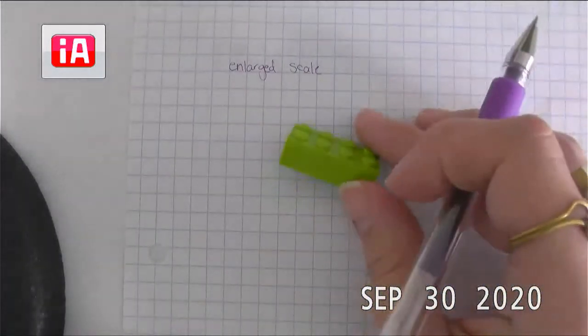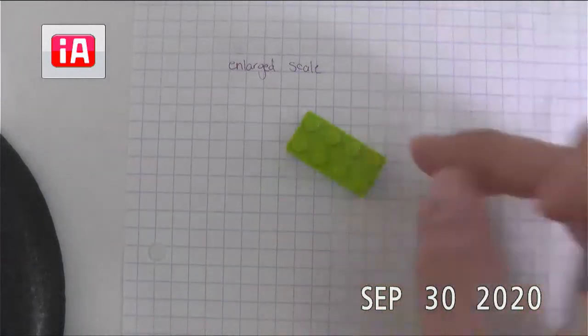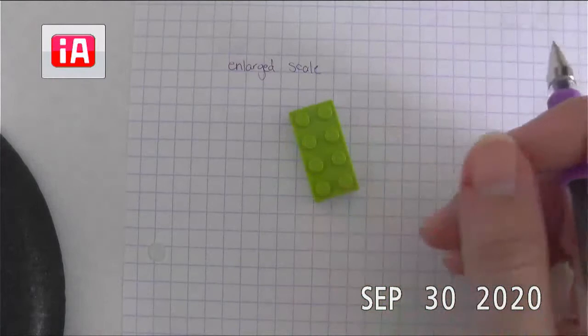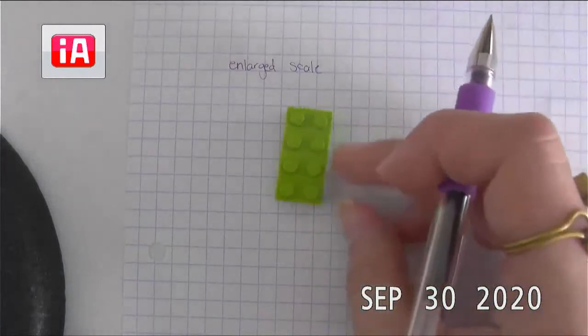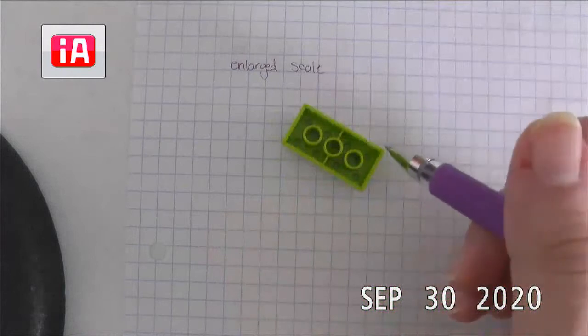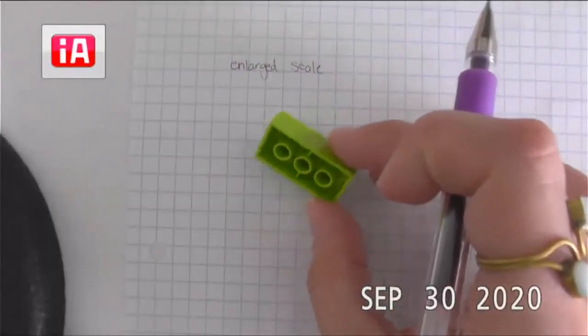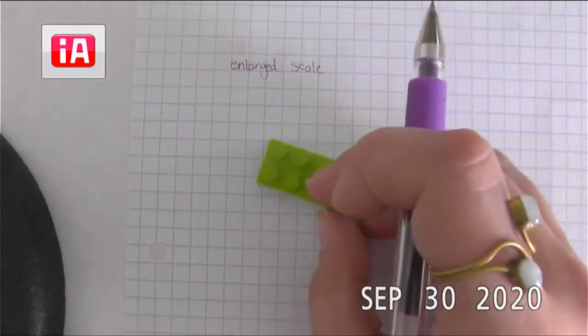So when they were originally making the patents for Legos, if they had just made the drawings at full scale, it would have fit on a piece of paper, but it might have been really hard to see some of these details. So they took that and they made the drawing much larger, so the details were easier to see.